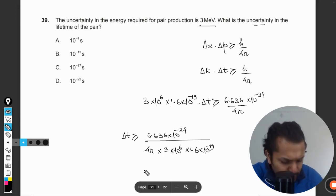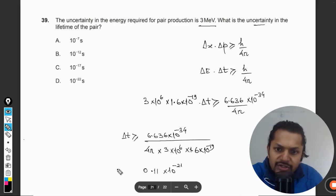Yes, so I'm getting 0.11 × 10^-21. This is Δt which is greater than or equal to this. So we are not interested in this inequality now.